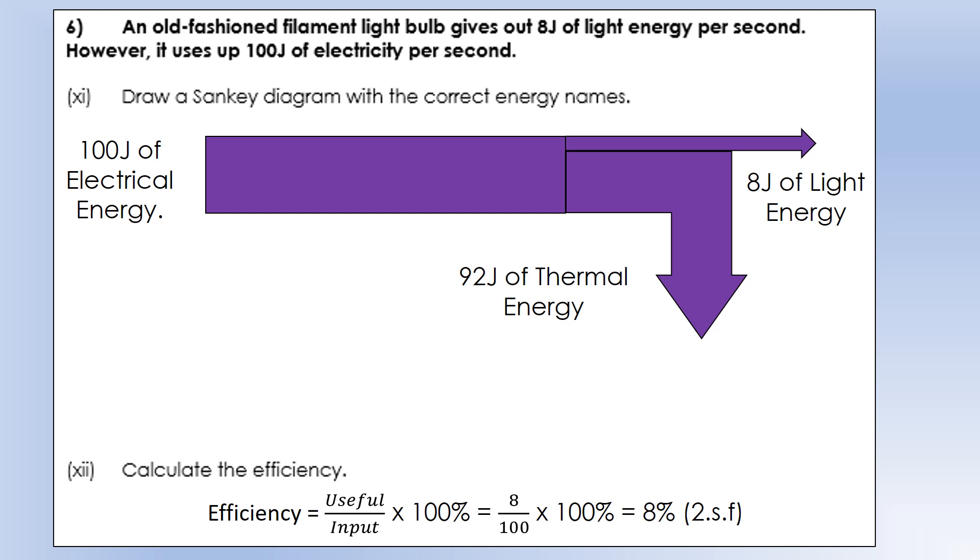We've got an old-fashioned filament light bulb, which gives out 8 joules of light energy per second. However, it uses up 100 joules of electricity per second. We're going to draw a diagram for the energy used every second. 100 joules of electrical energy goes in every second. 8 joules of light energy is usefully transferred every second, which means 92 joules are wasted every second, sent to the surroundings as heat. If you've ever gone near a light bulb, you'll know it's pretty hot.